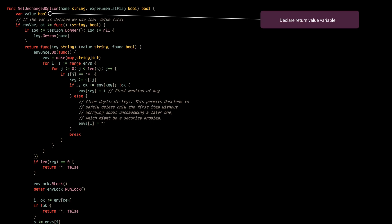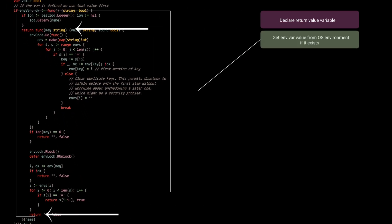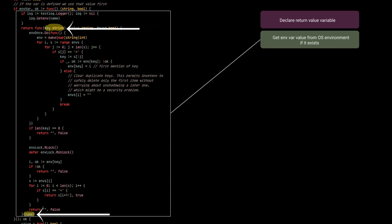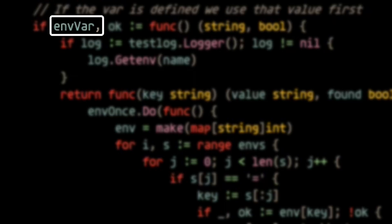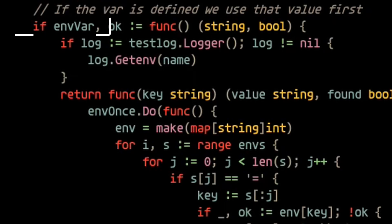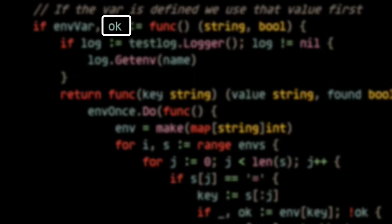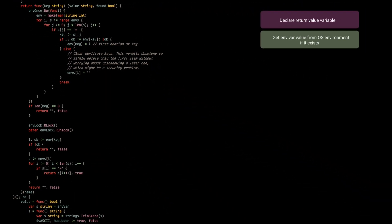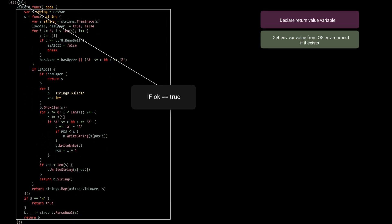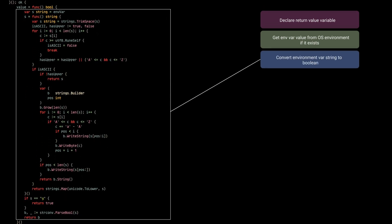I'll just tell you what each segment of code is doing in plain English. Starting here, we simply declare the variable for the return value of the function. Then we're looking up a named environment variable to see if it's defined in our OS environment, and if it is, we're assigning the value to the variable `environment_var` and setting `ok` to true.